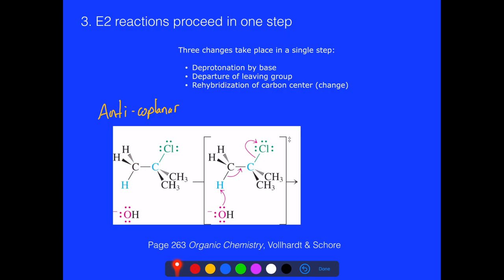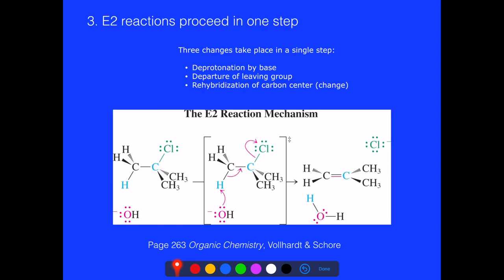This is all occurring in one step, with all three arrows going simultaneously. The base abstracts the hydrogen to become water, a carbon-carbon double bond forms, and the leaving group departs. The product has water, the alkene, and the leaving group. The two carbons involved rehybridize from sp3 to sp2 as the double bond forms, since the tertiary carbon had three attached groups to help favor the E2 elimination.